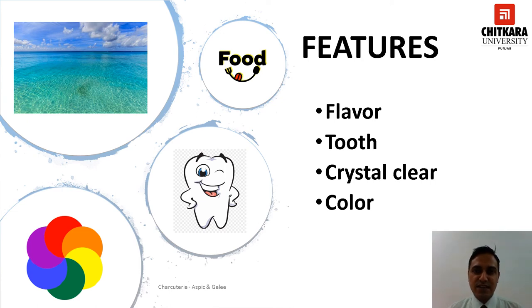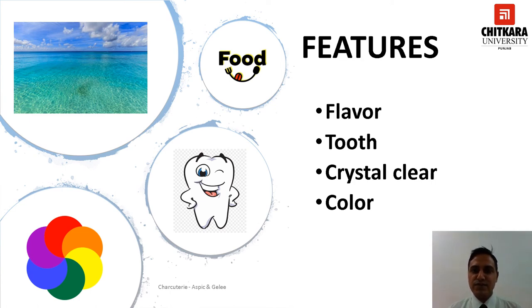Aspic jelly should be absolutely crystal clear. The range of colors in aspic jelly lies between a rich amber, almost brown color that can be used for game, to a nearly colorless jelly for fish.